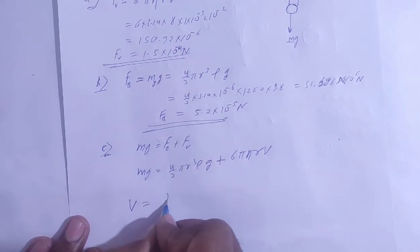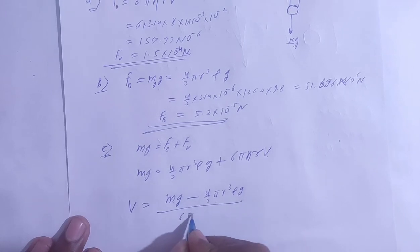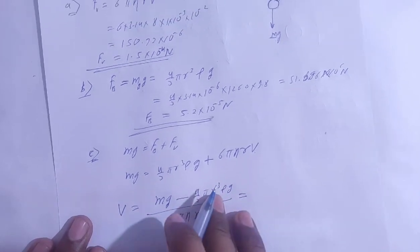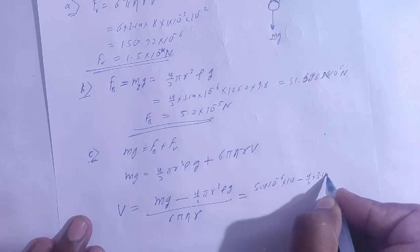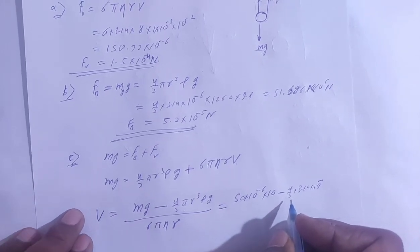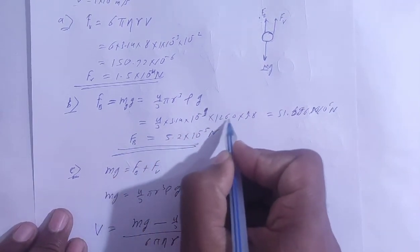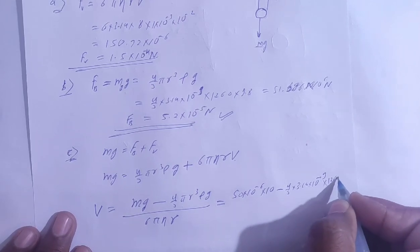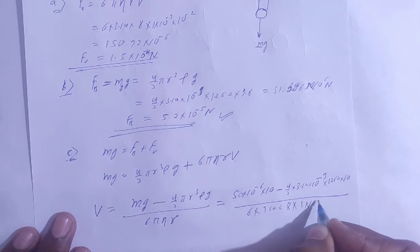Rearranging, the terminal velocity v = (Mg − (4/3) π r³ ρ g) / (6π η r). Substituting values: mass is 50 × 10⁻⁶, r is 10⁻³, ρ is the glycerin density, η is 8, and g is 9.8. After solving, we get the terminal speed.